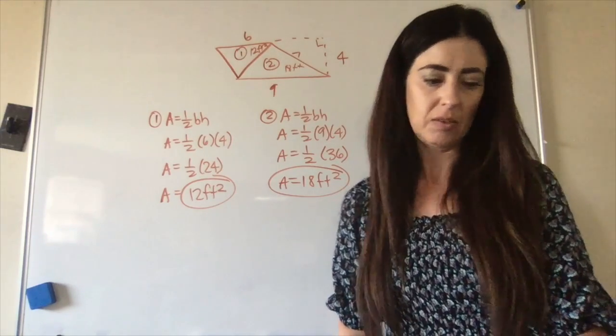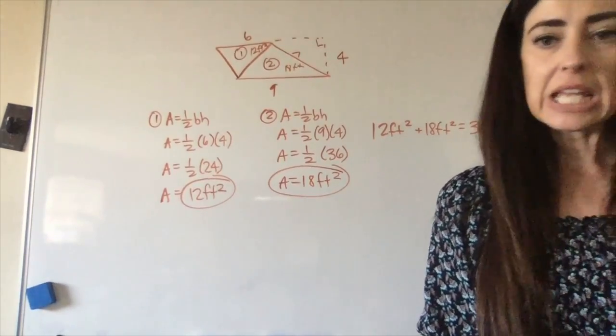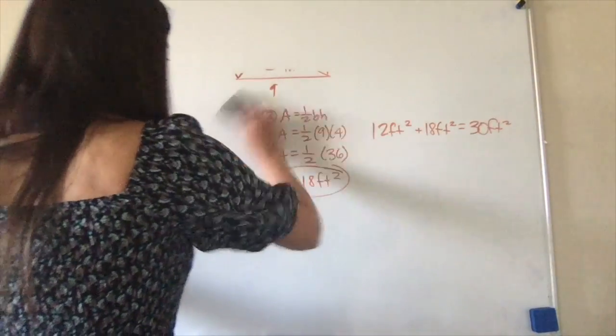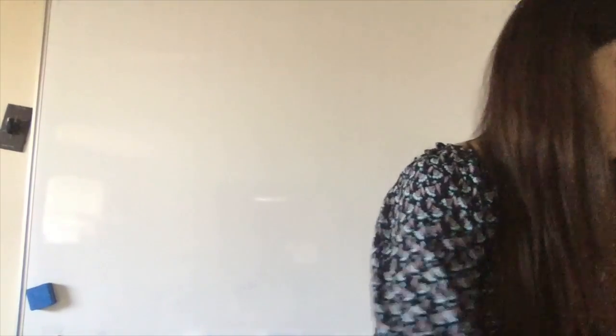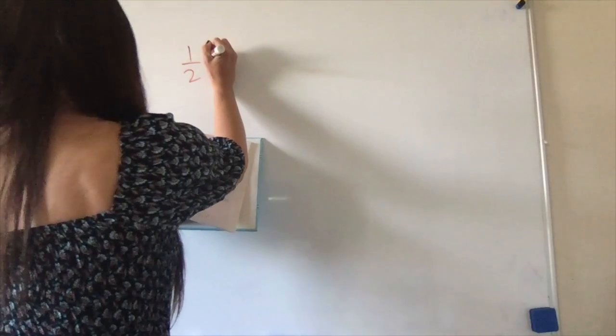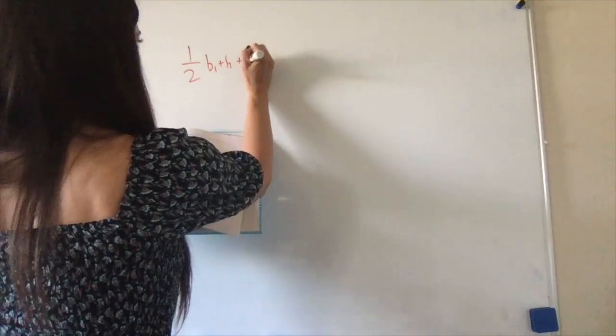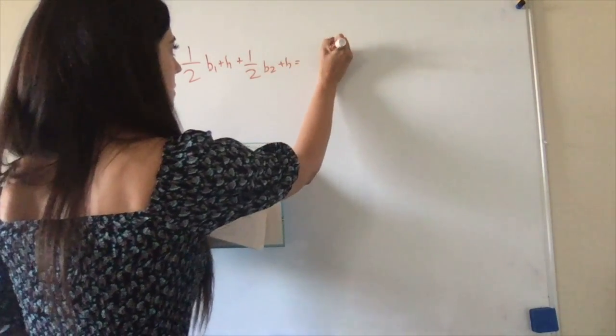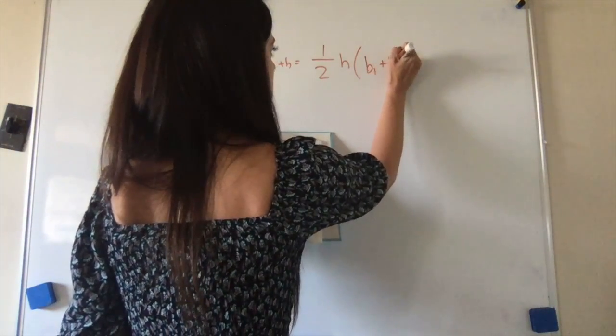One-half base times height is a formula that we are very familiar with. Find the area of each triangle, add them together. In your book, they give you this big, long equation. And it is a true equation. I just think it's rather confusing. So, they say one-half base 1 plus height plus one-half base 2 plus height. But that is the same thing as one-half the height times base 1 plus base 2.